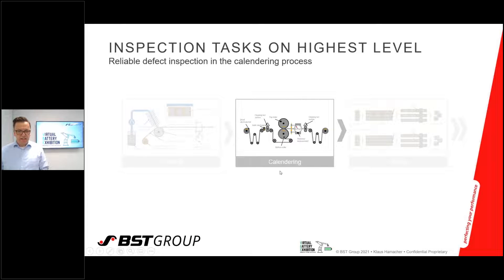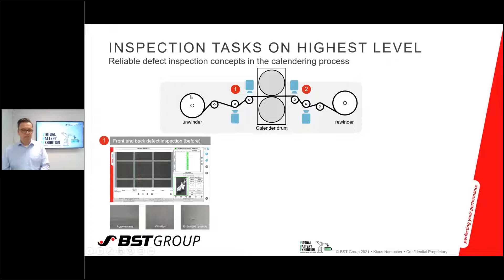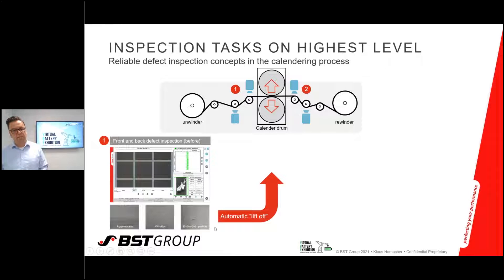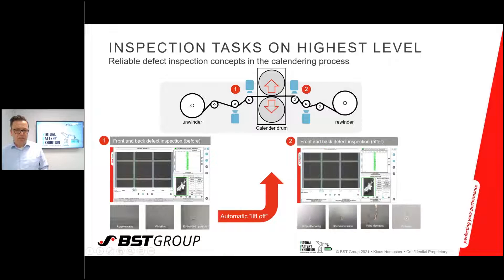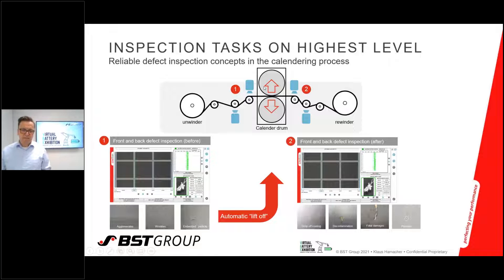The next step is calendaring. As mentioned, you can also do surface inspection in front of the calendar. If you find agglomerates or wrinkles, you can lift up the cylinder — the calendar drum — to avoid defects on or damage to the drum. Afterwards, you need to check for drop-off coating, decontamination, fatal damages, or pinholes. That is a typical application in the calendar line, and the pre-calendar inspection is an option that is possible here.